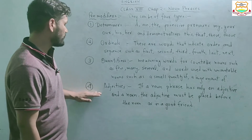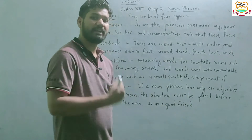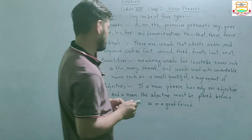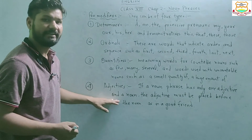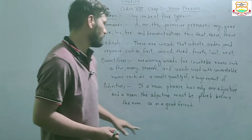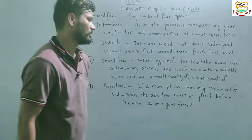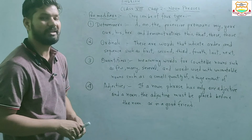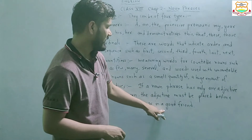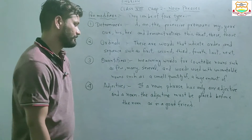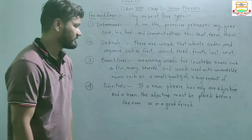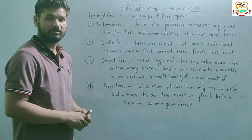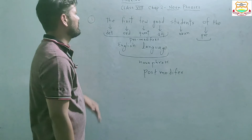The fourth type of pre-modifier is adjectives. If a noun phrase has only one adjective and a noun, the adjective must be placed before the noun, as in 'a good friend'. In this phrase, 'friend' is the noun and 'good' is the adjective placed before the noun.